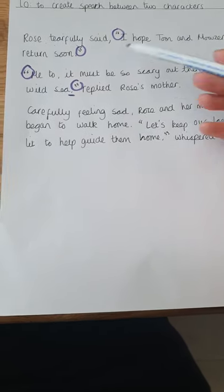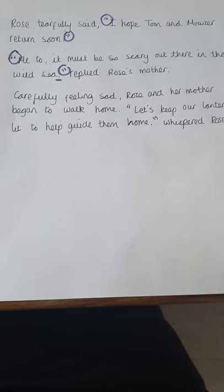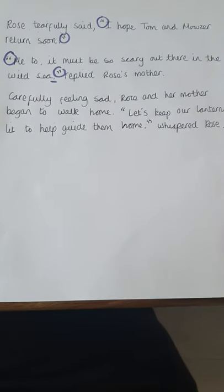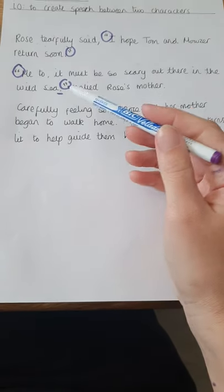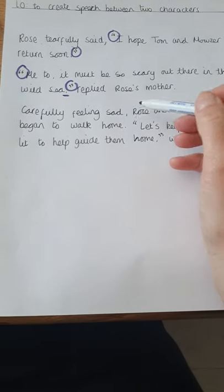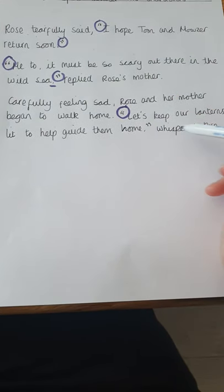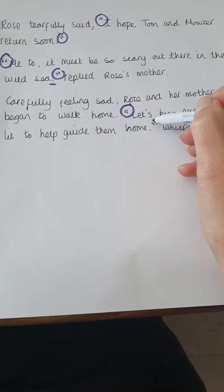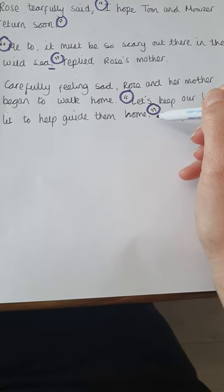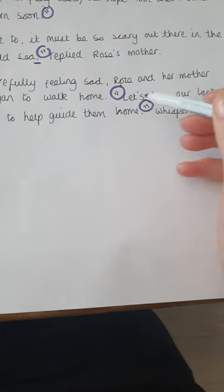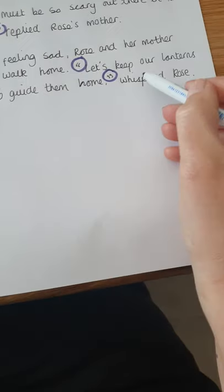I've then gone on to my next example of speech. But before I've put that speech, I've just put a bit of a sentence to describe to the readers what is going on — it gives them a bit more information: 'Carefully, feeling sad, Rose and her mother began to walk home.' Again, I'm opening my speech with an inverted comma: 'Let's keep our lanterns lit to help guide them home,' whispered Rose. I'm closing my speech — everything inside my inverted commas is what the character has said. Before I put my inverted comma to close the speech, I've put a comma, and then told you how it has been said and who has said it.